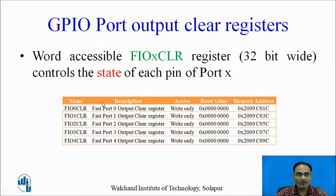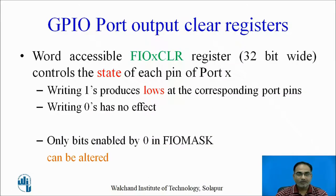Next is the GPIO port output clear register. This register is used to control the state of each port pin of port X. We have five sets of registers: FastIO 0 clear register to FastIO 4 clear register. This register is write-only. These are the memory addresses you can use for accessing these registers. The default value is 0 for all these registers. This register is used to force logic low on any particular port pin of port X. Writing 1 produces low on the corresponding port pin, while writing 0 has no effect. Only bits enabled by 0 in the mask register can be altered.